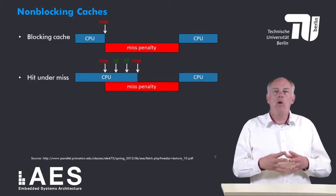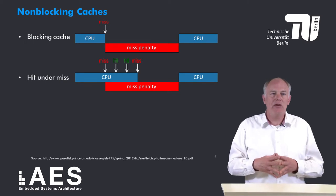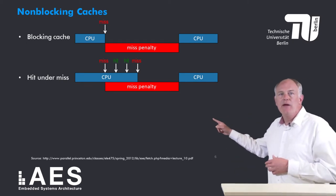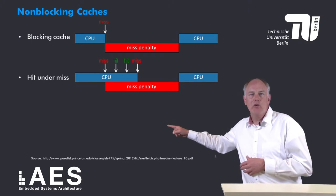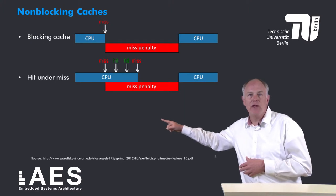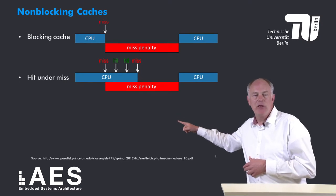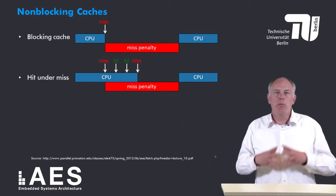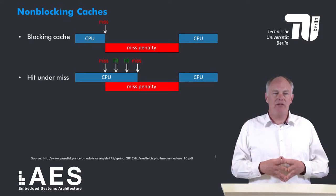If we allow hits under one miss, the CPU incurs a miss but continues executing while the miss is being handled. The data cache supplies several hits until a second miss occurs, at which point the CPU has to stall. So part of the miss penalty can be overlapped in this scheme.